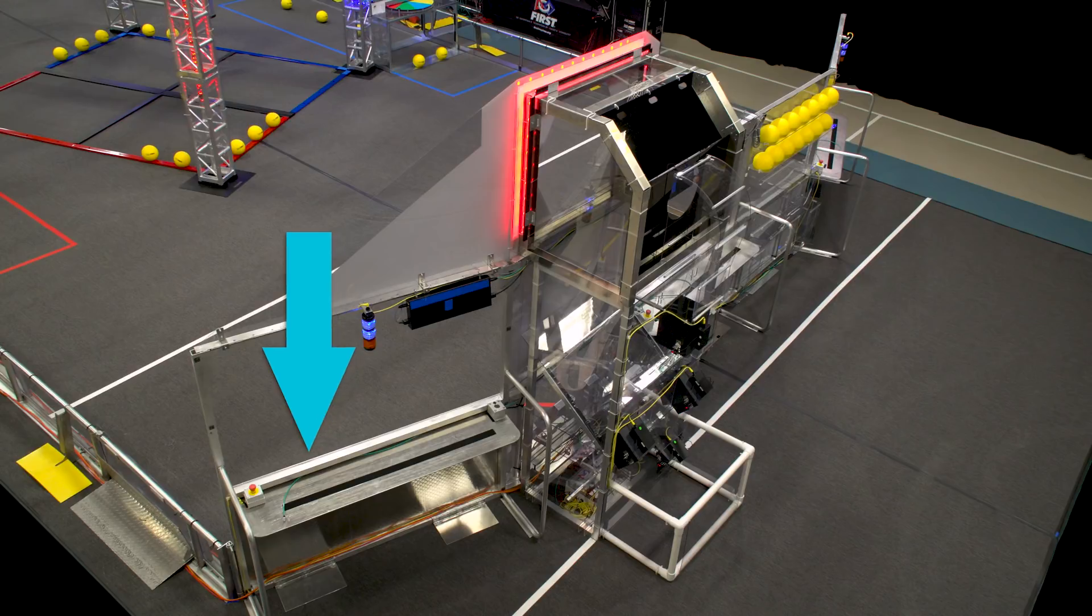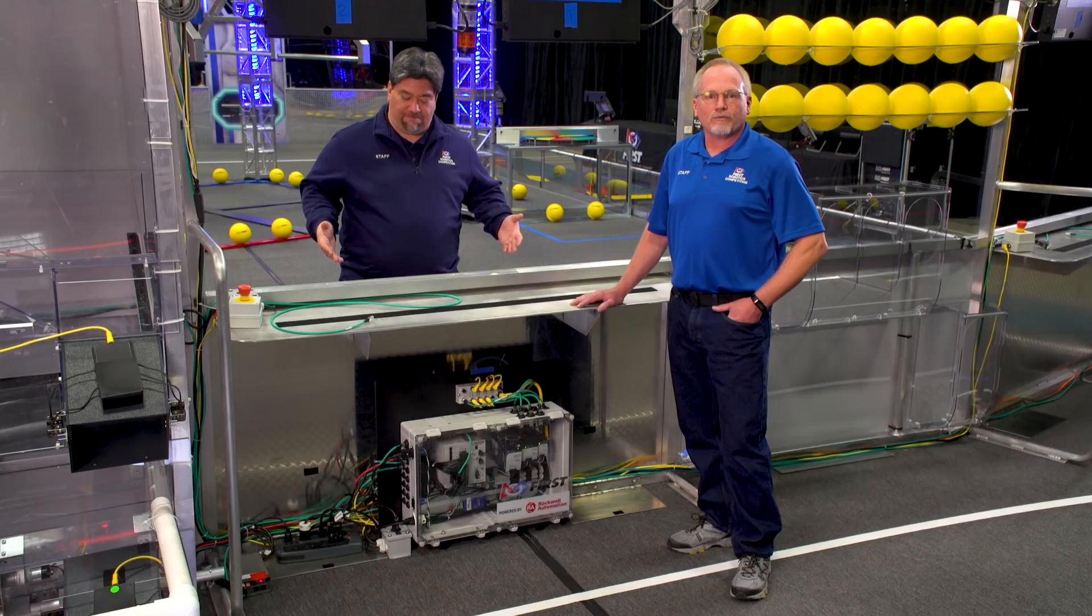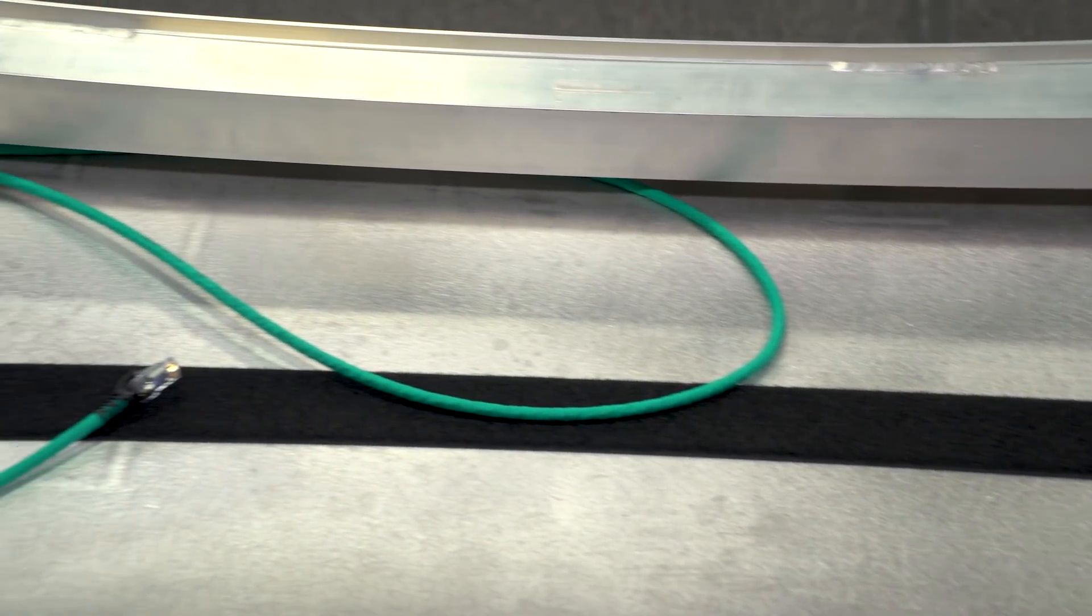Each player station has a shelf for an operator console. Note the strip of loop tape that runs 2 inches wide. The hook tape on your operator console will help prevent it from sliding around or worse, falling off the shelf.